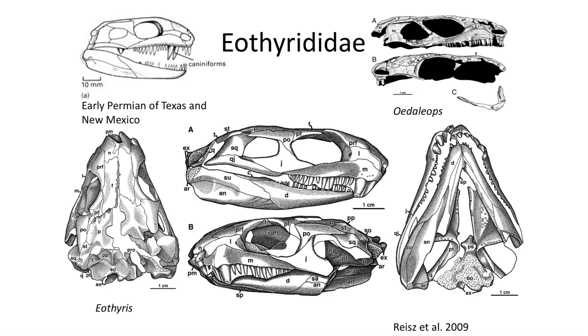Another early Permian synapsid fossil is Oedaleops, which is known from the Cutler Formation. It features a large temporal fenestra but retains a very primitive-looking skull.